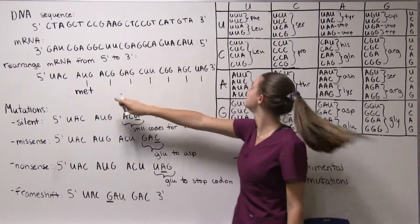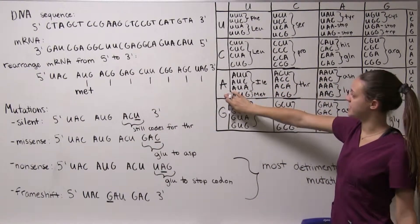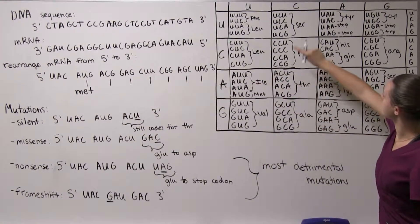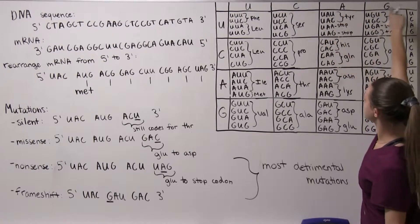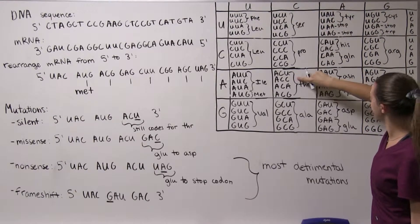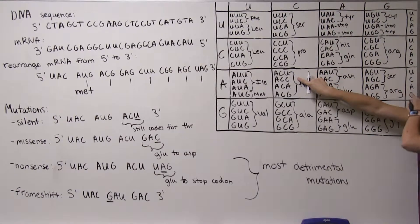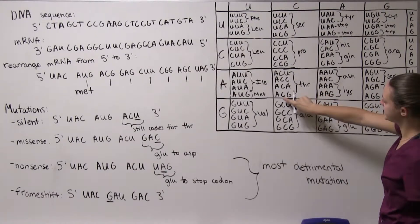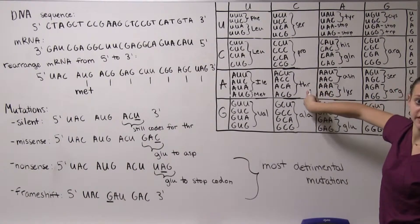Now we have ACG so we start here again A. Our second letter we look at this row so we have C here and then our third letter we look at this row so we have ACG here and it's threonine.